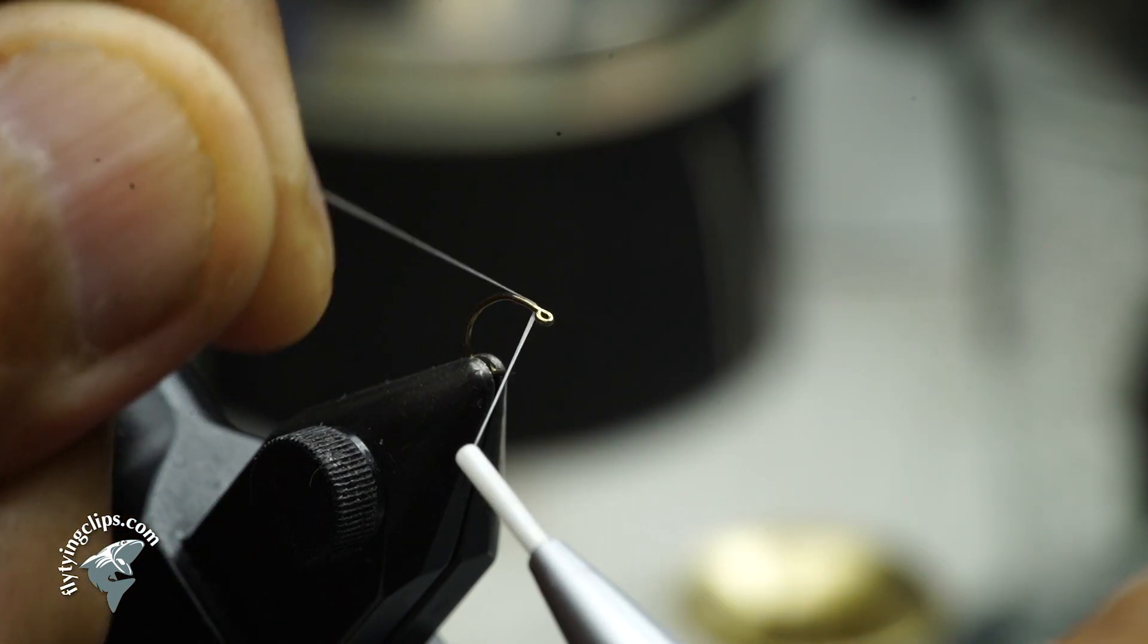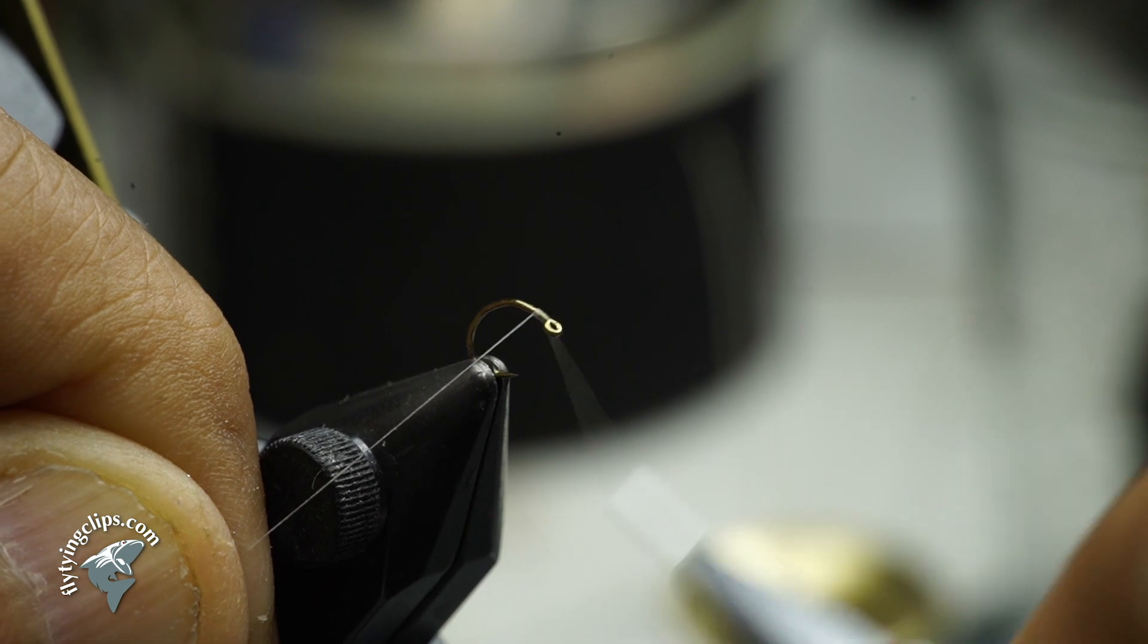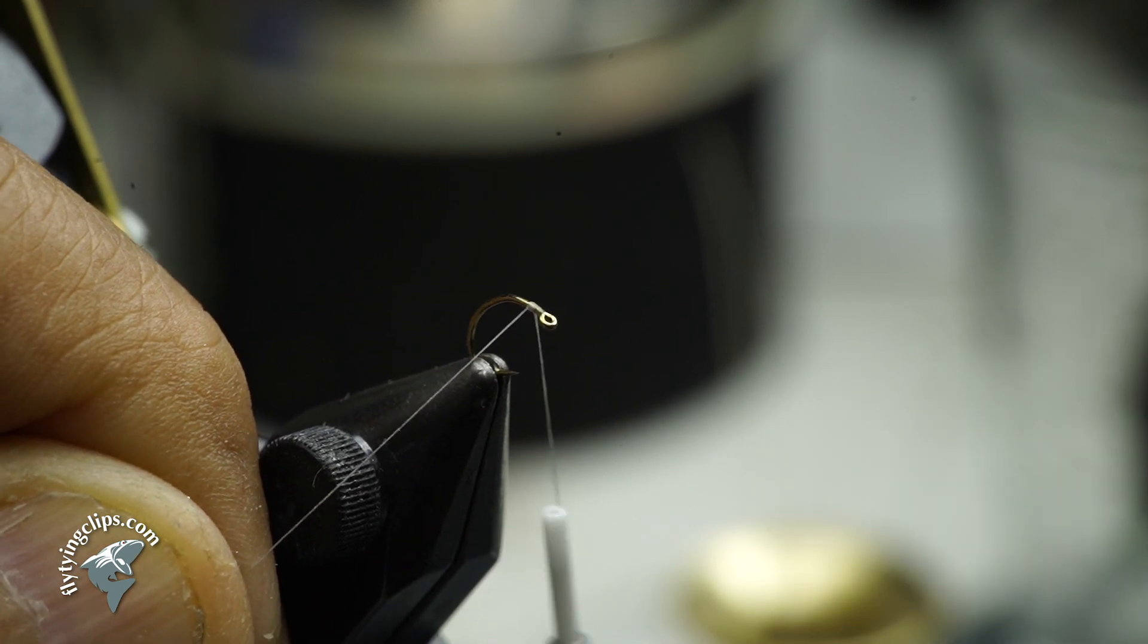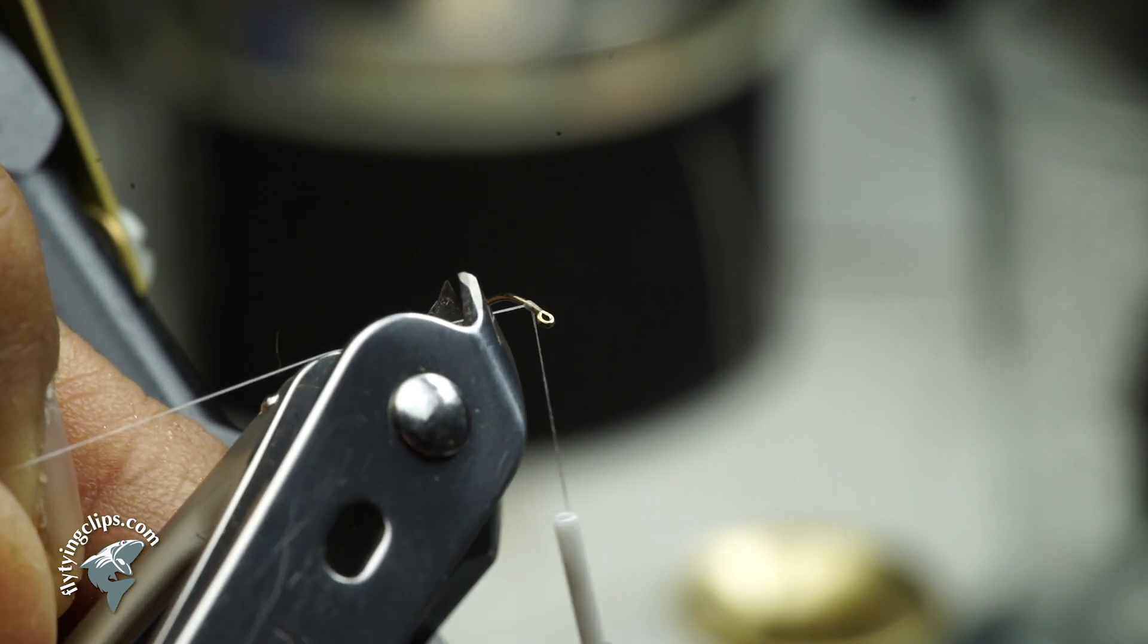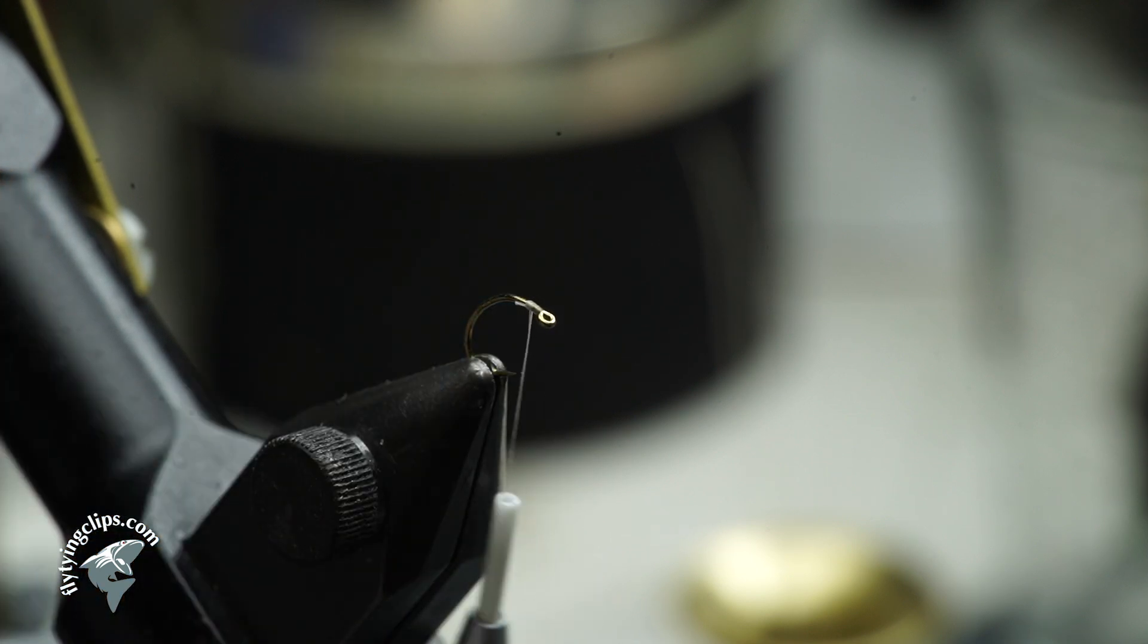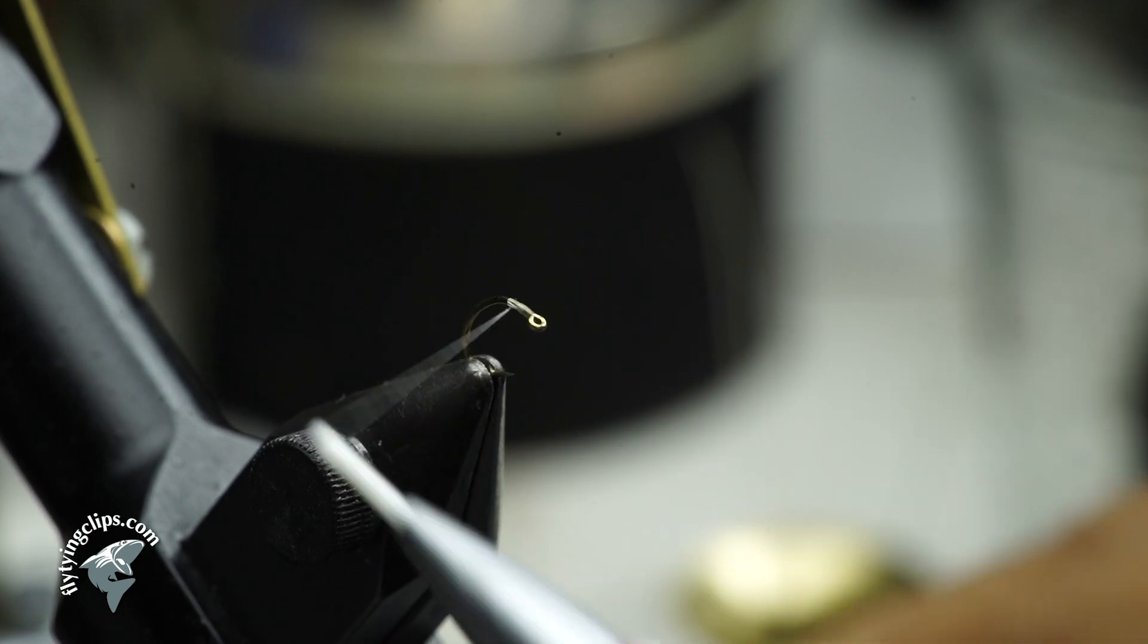This just happens to be TMC 212 size 17. Any clink hammer, any hook you want to use is fine, or dry hook. I just like this hook.